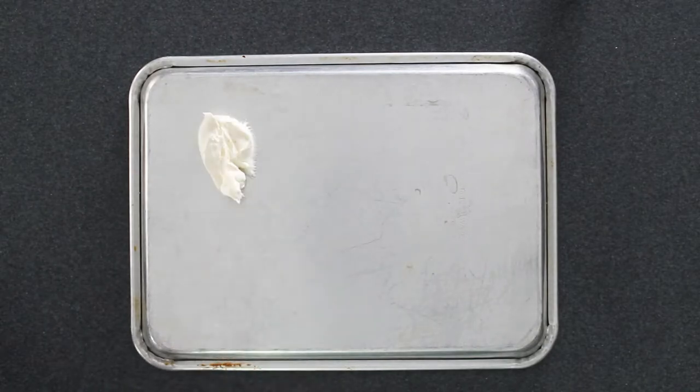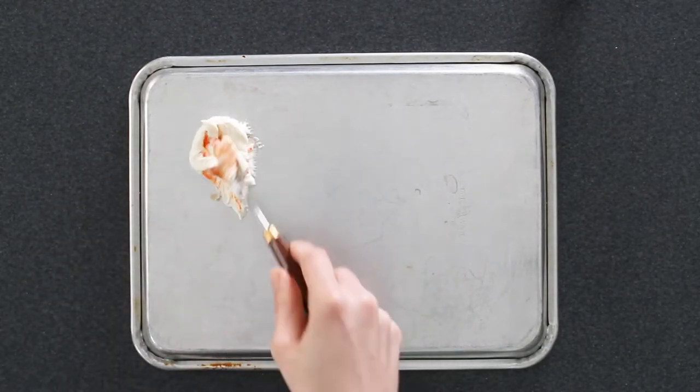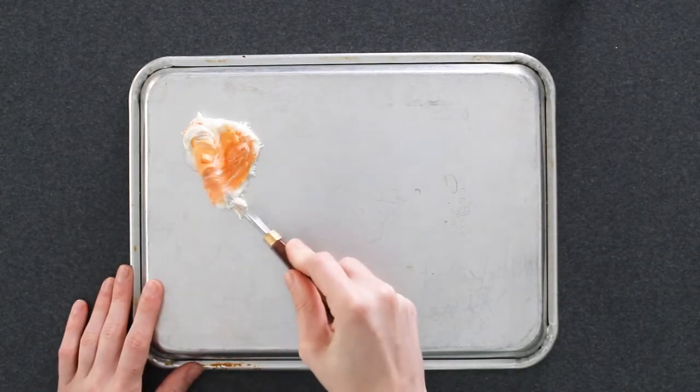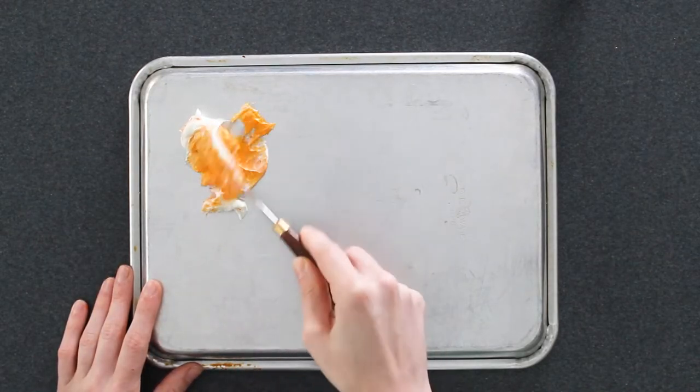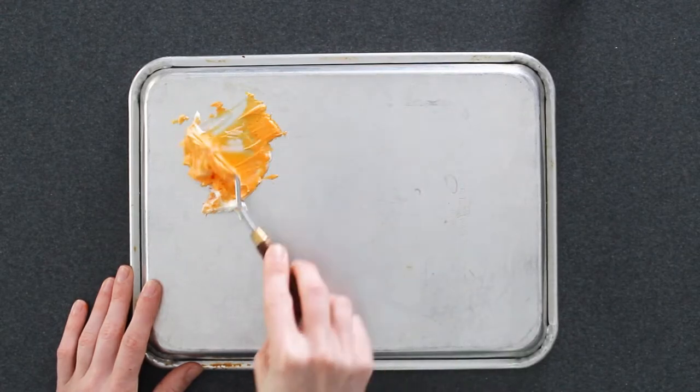I like to use the back of a sheet tray to mix my colors but you could use any flat surface. I'm mixing my yellow first since I'll need a large amount of this color. Just use the palette knife to scrape the frosting back and forth until the color is evenly mixed.